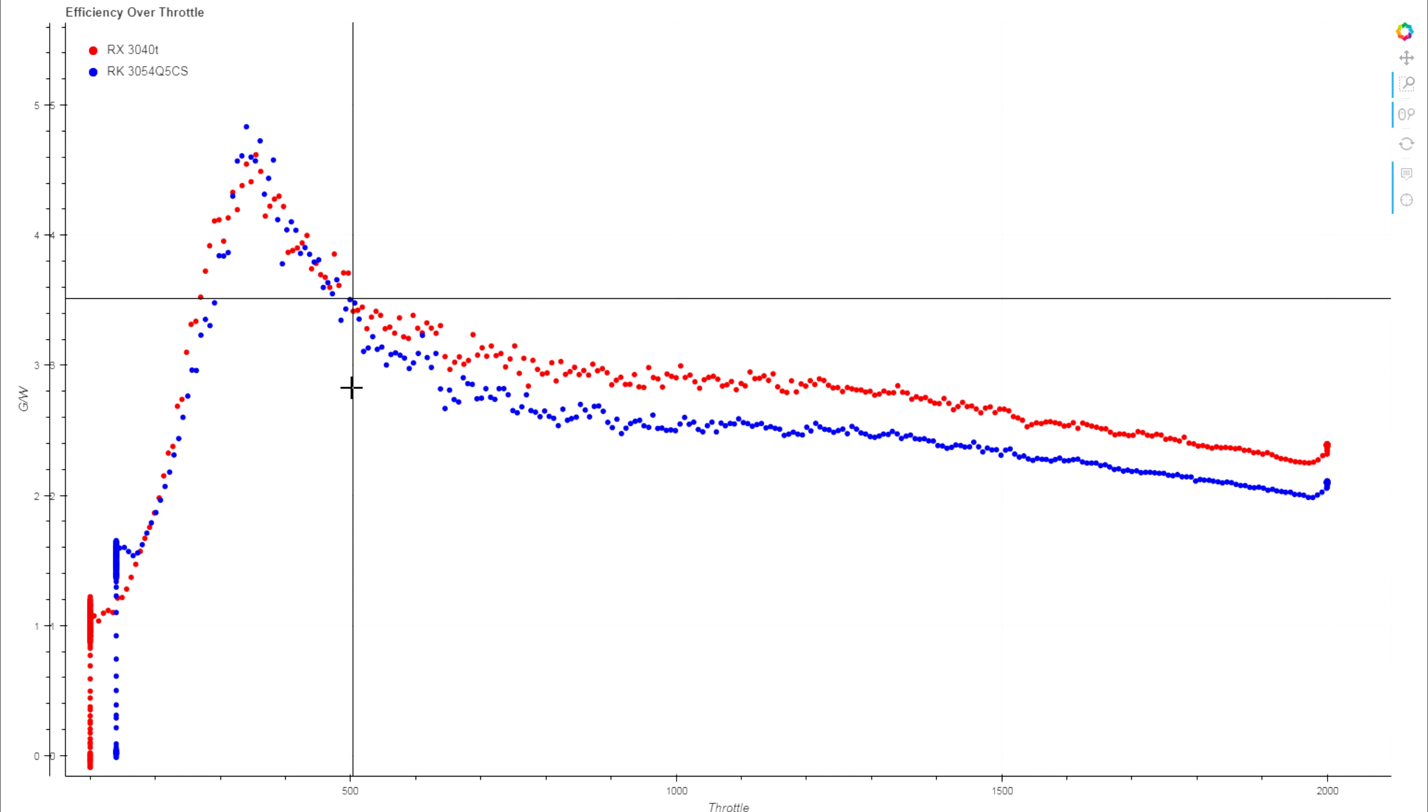Looking at efficiency over the throttle range as usual, in low throttle they are both getting a nice peak in efficiency. The efficiency actually is very similar up until about the lower quarter. That fairly even separation between the two that we saw in the base efficiency graph, you can see they're reflected over the throttle range as well.